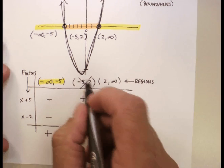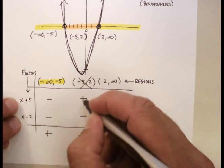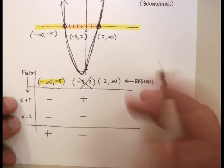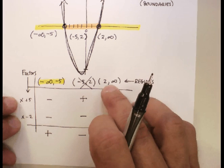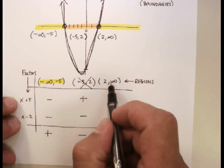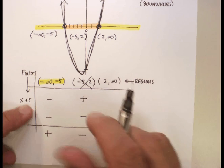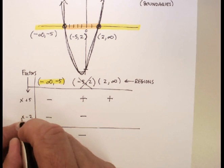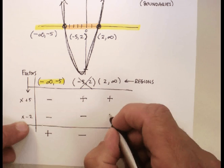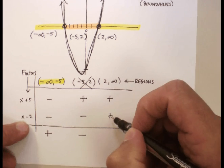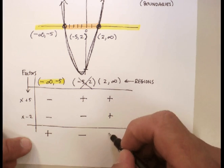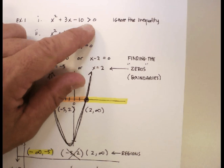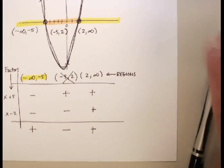Again, just choose a number out of here. Plug it into the factors. Tell me we get a positive or a negative and then multiply them. It works great, doesn't it? Let's try a number out of this region. How about positive three? It's just somewhere on the other side of two. So positive three plus five is a positive number. Positive three minus two is a positive number. A positive times a positive is a positive. And again, a positive number is greater than zero. Okay? Which means that that region works as well.